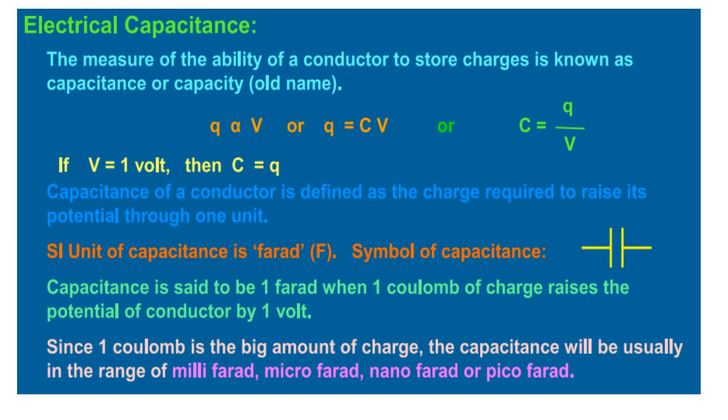If a charge Q put on an insulated conductor increases its potential by V, then we can say charge is directly proportional to potential. Q is directly proportional to V, or we can write Q is equal to CV.